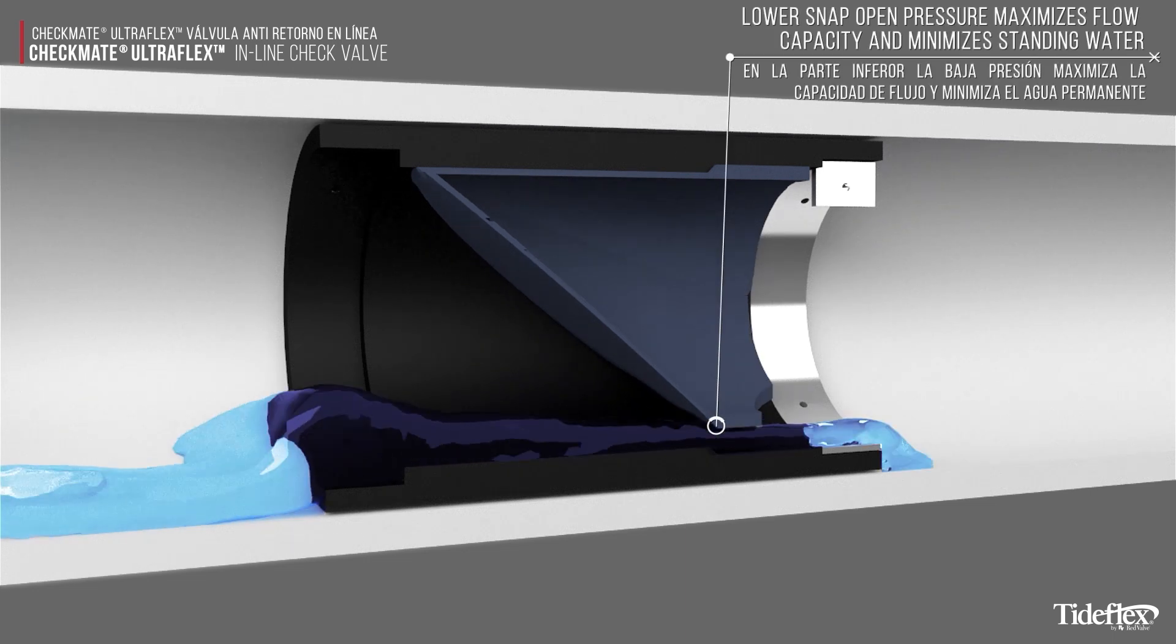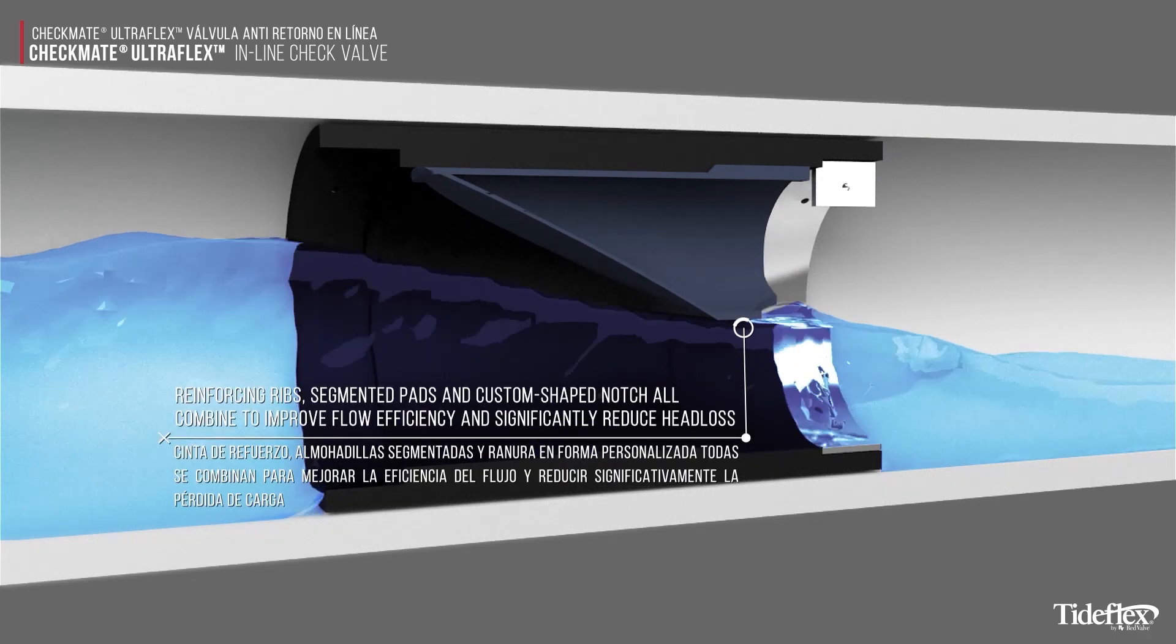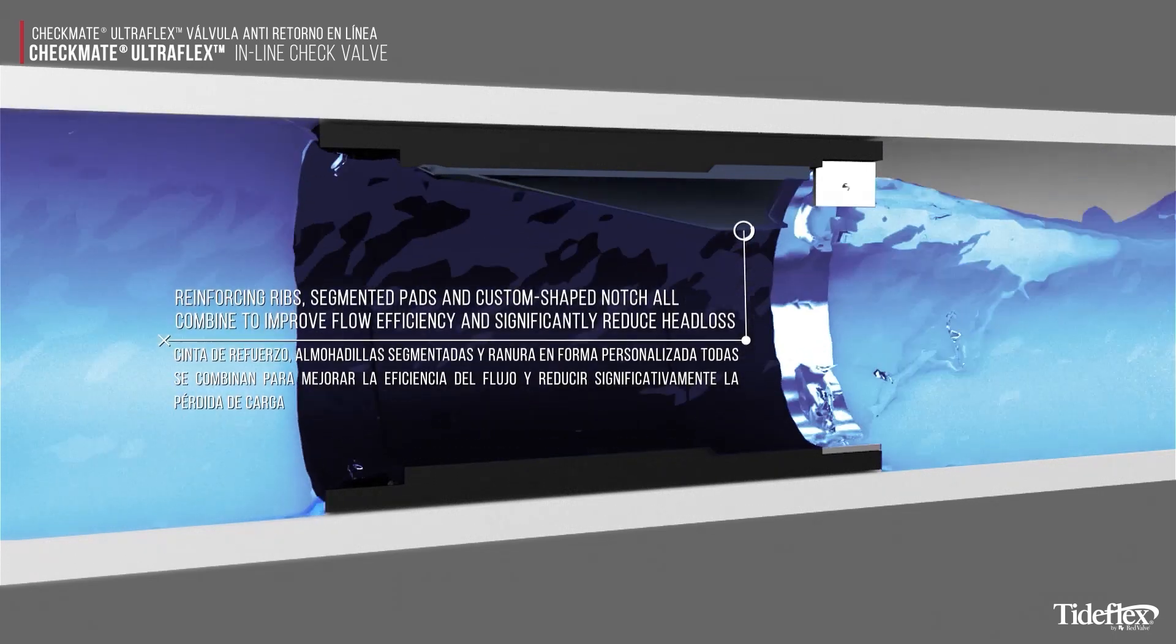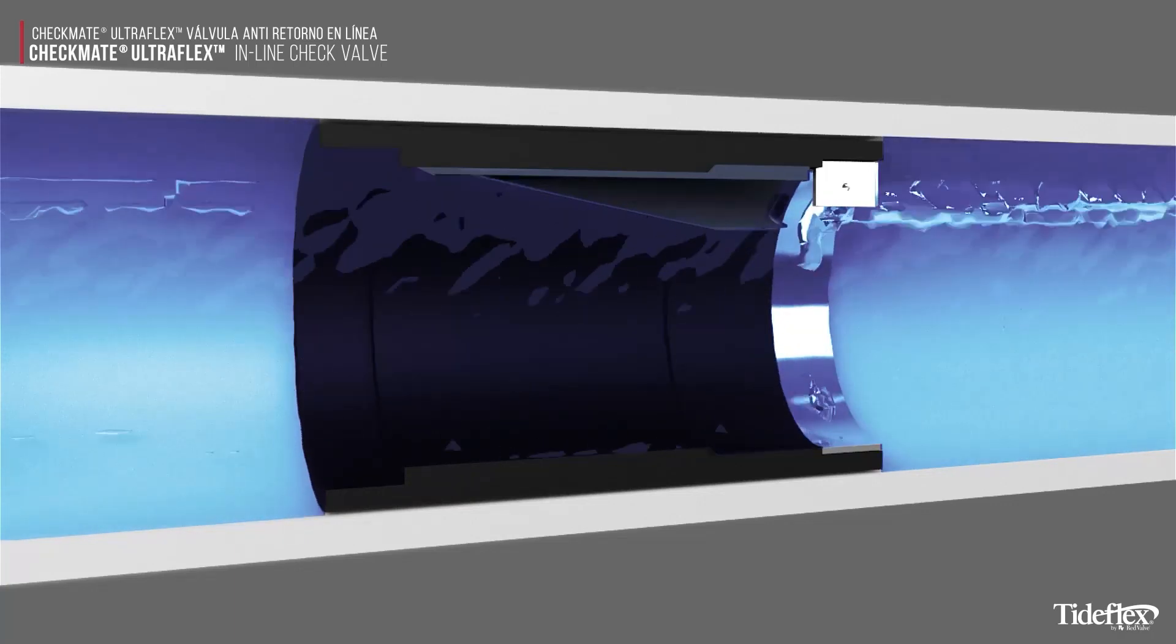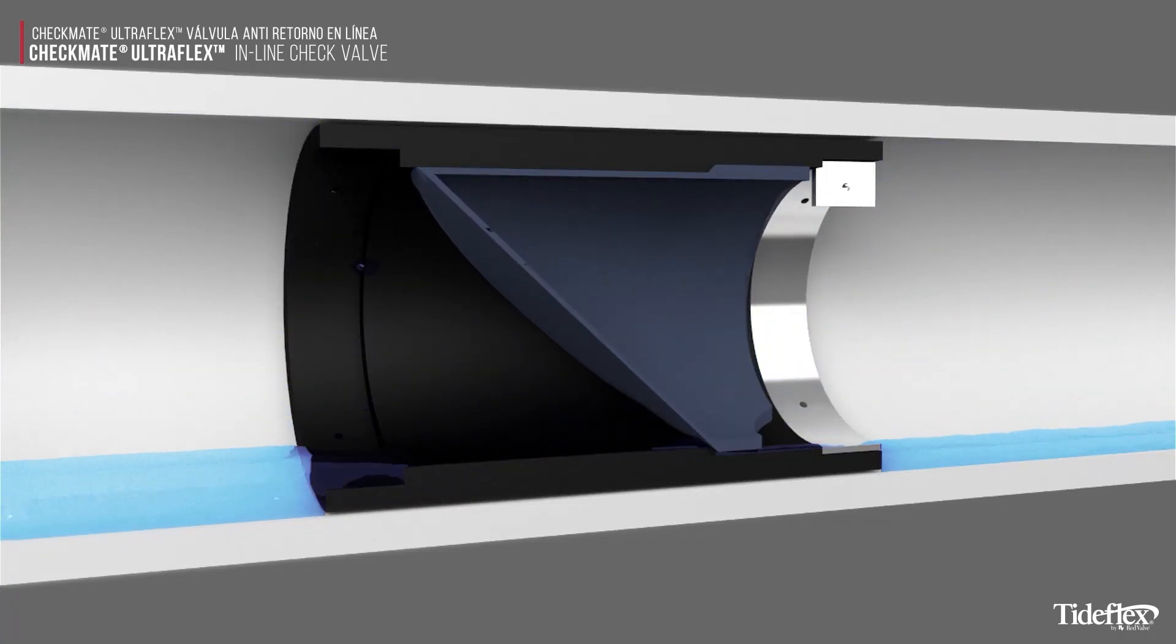A lower snap-open pressure maximizes flow capacity and minimizes standing water. Strategically designed reinforcing ribs, segmented pads, and a custom-shaped arc notch improves flow efficiency and significantly reduces head loss.